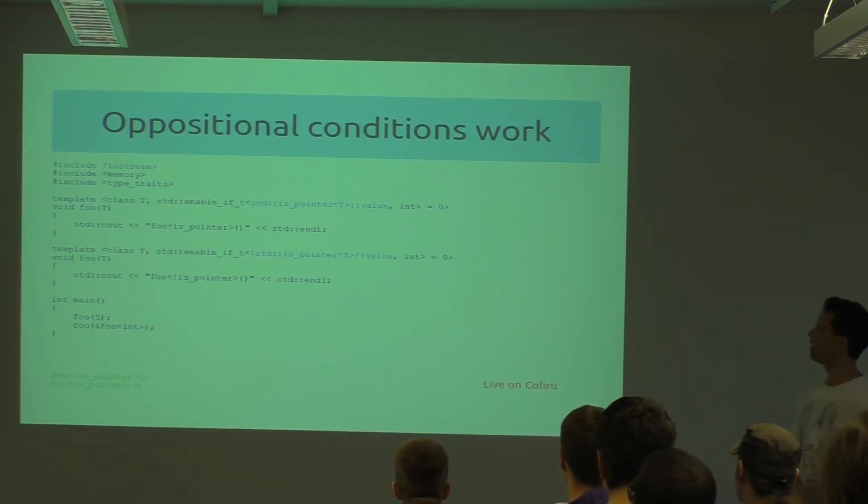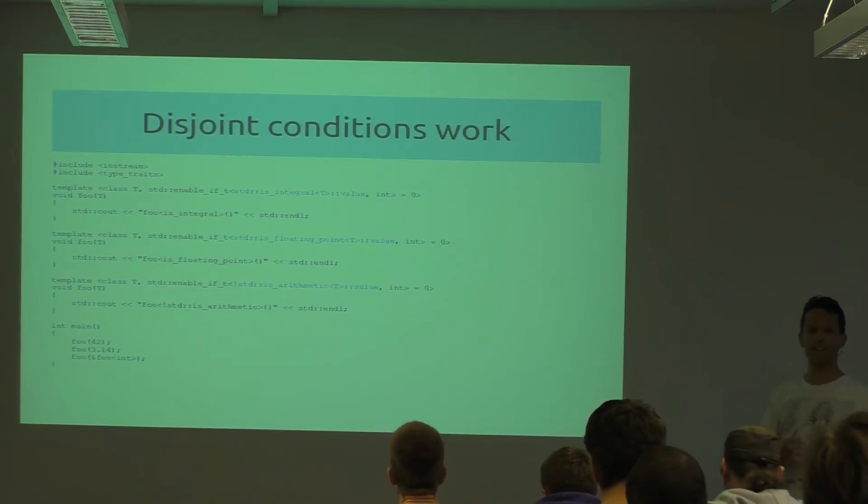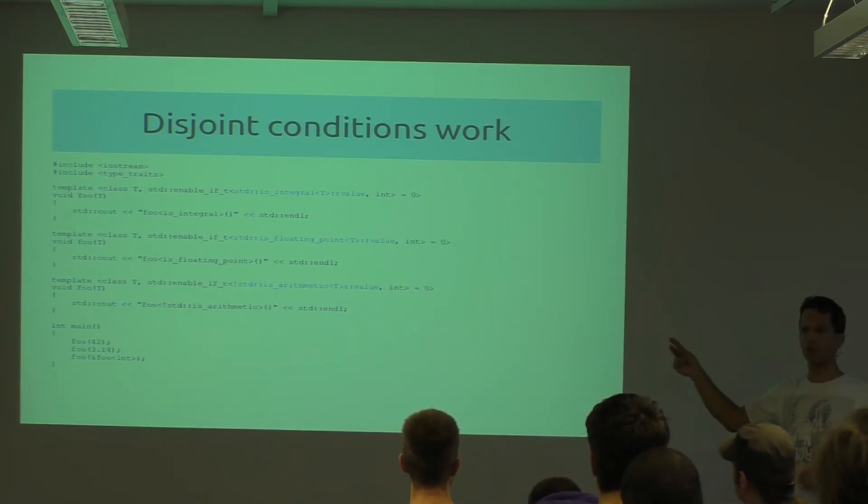Now a bit more complicated: we got the three disjoint cases using is_integral, is_floating_point, or not is_arithmetic. As the header tells you already, this works because each function invocation will select exactly one overload, and the other two will not take part in the overload set because SFINAE kicks them out. So everything is nice.